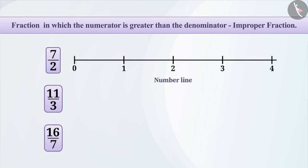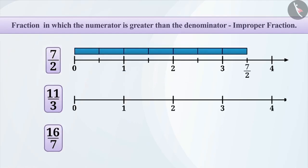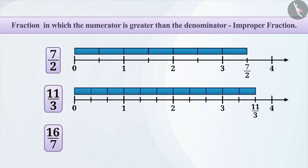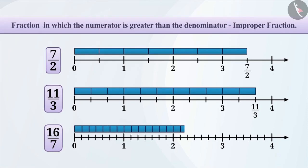Let's also represent them on the number line. To represent 7 by 2, we will divide the unit length into two equal parts and take seven such parts on the number line. Similarly, to represent 11 by 3, we will divide the unit length into three equal parts and take 11 such parts. For 16 by 7, we will divide the unit length into seven equal parts and take 16 such parts on the number line.